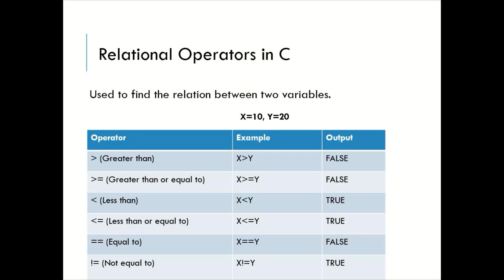Relational operators are used to find the relation between two variables — that is, relational operators are used to compare two values. Sometimes we need to perform some operations or calculations based on various criteria, so in this case we need to compare the values and there we make use of relational operators. For example, highest marks scored by a student, maximum sales done by a particular branch. So here we need to compare various values. In C language we have various relational operators which are shown in this table.